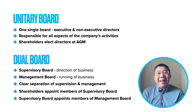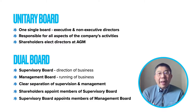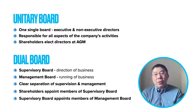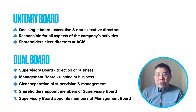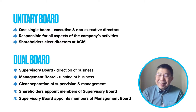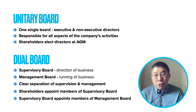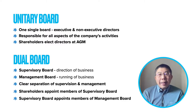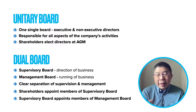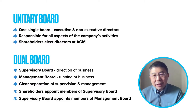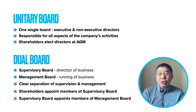These are the types of boards you will find across the world. In Malaysia, we tend to have mostly unitary boards. Dual boards can be found in some countries in Europe — for example, in Germany. There are pros and cons, strengths and weaknesses, to each of these board structures.